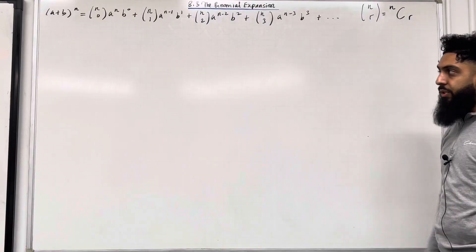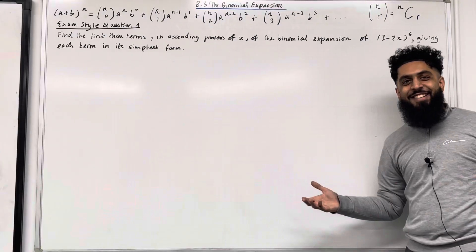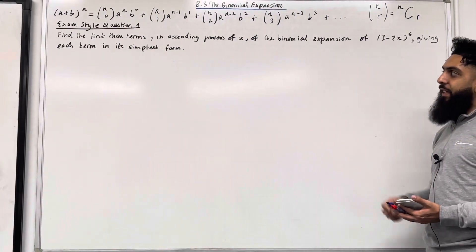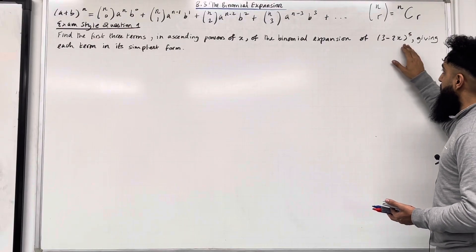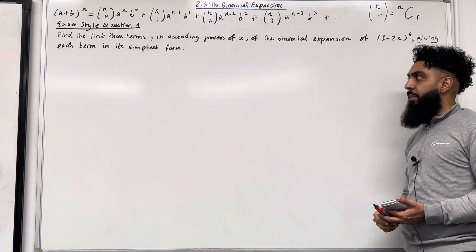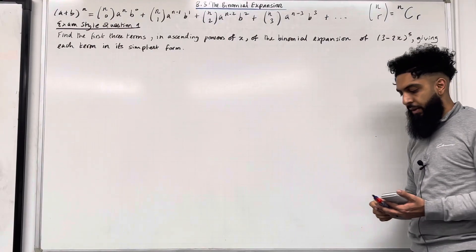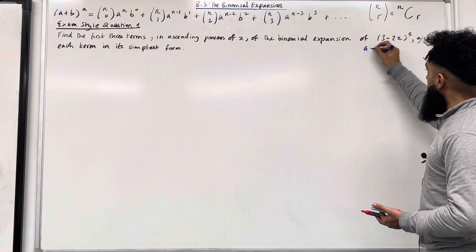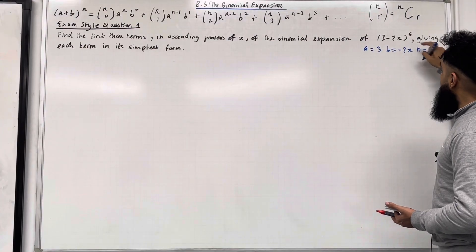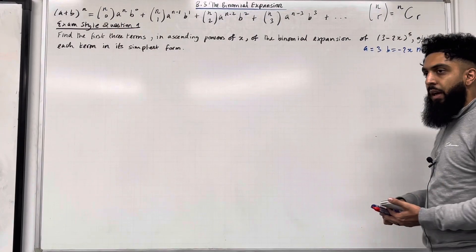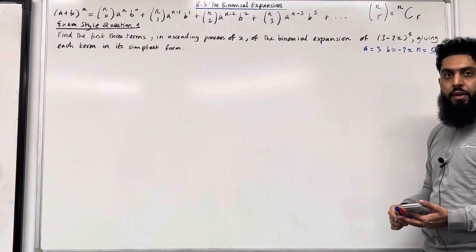I'm going to cover two examples on how to expand binomials using the binomial expansion formula. Exam style question 1: find the first three terms in ascending powers of x of the binomial expansion of (3 minus 2x) to the power 5, giving each term in its simplest form. The first step is to write down the values of a, b, and n. So a is equal to 3, b is equal to minus 2x, and n is equal to 5. Now we need to substitute a, b, and n into the binomial expansion formula.